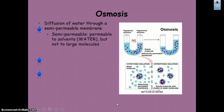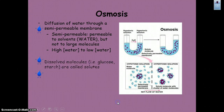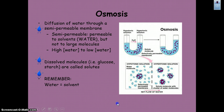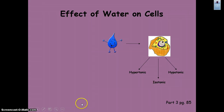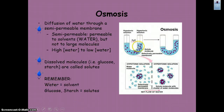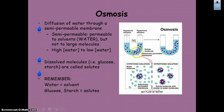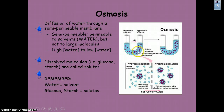Osmosis is the movement of water across a membrane. Just like anything that goes through diffusion, water moves from an area of greater to an area of lesser concentration. In this diagram, there's a semipermeable membrane in the middle, with solute molecules in purple and water in blue.